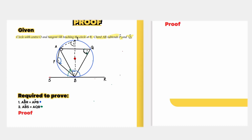Returning to the proof: the first thing we state is what we have constructed. We drew the diameter BT and joined T to A.